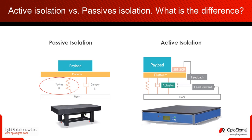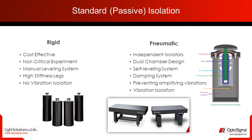The spring isolator reduces the magnitude of floor vibrations transmitted to the payload, whilst the damper dissipates vibrations amplified within the isolation system. Passive vibration isolation systems are rather affordable and effective at dampening high-frequency vibrations, however they won't be suitable for applications in which low-frequency vibrations are a concern.